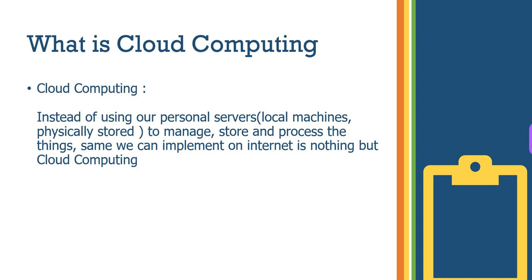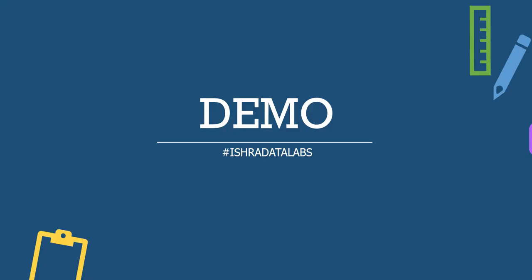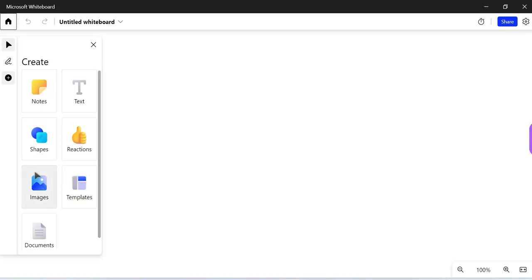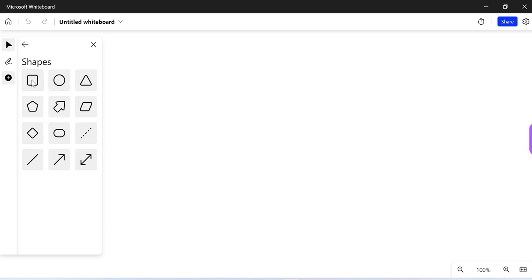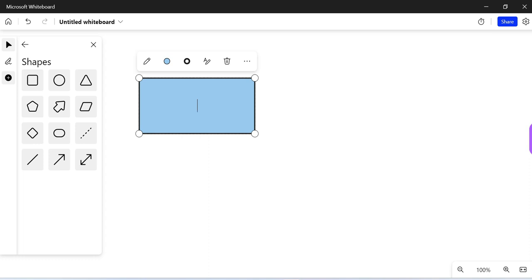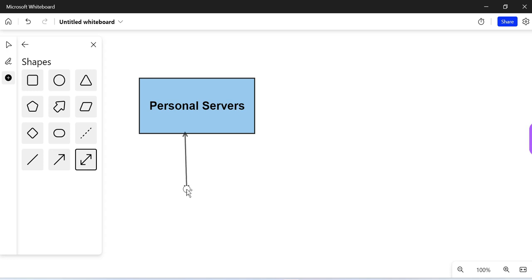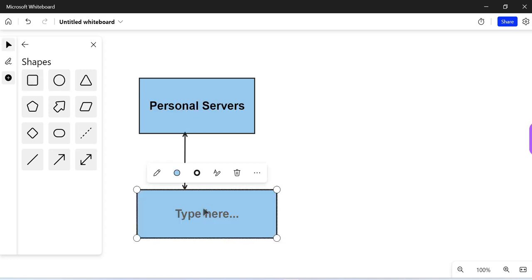If we use personal machines, we can implement the same on the internet. Cloud computing means personal machines manage, store, and process data. So this means we can use personal machines or personal servers. According to an entity or general office's local needs, you can have a separate storage setup.